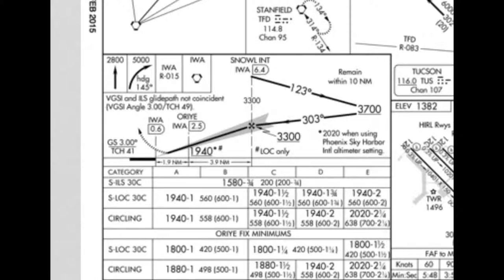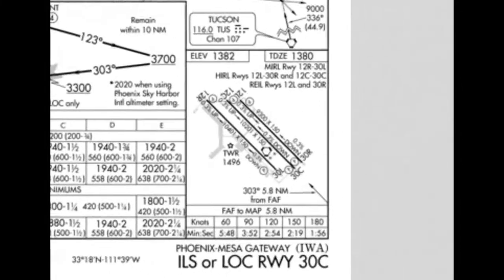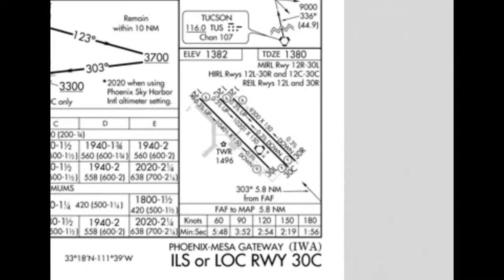The bottom right of the plate is your airport diagram, showing elevation 1382 and touchdown zone elevation 1380. Your final approach fix to the missed approach point is 5.8 nautical miles, and you use the timing table to find your missed approach point. For example, at 90 knots it would take 3 minutes and 52 seconds from your final approach fix to your missed approach point.